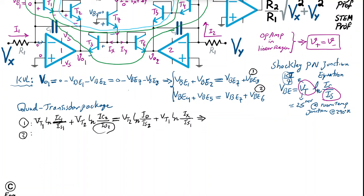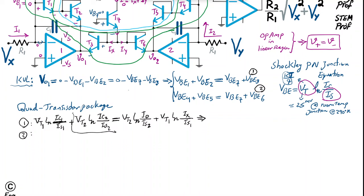The saturation current IS is extremely sensitive to temperature — it can increase by approximately 3.4× when junction temperature changes by just 10 to 15 degrees Celsius. We must eliminate its impact, and the matched-package grouping achieves exactly that.